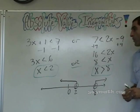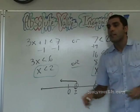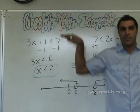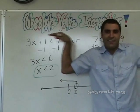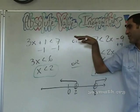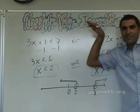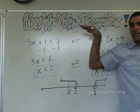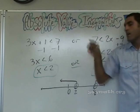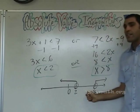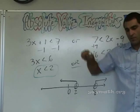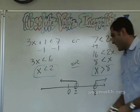So if you have 'or,' the graph goes outward like this — arrows pointing away from each other. If you have an 'or' going outward like this, this is okay. But if you have an 'and' going outward like this, what's the answer? No solution. Very good.